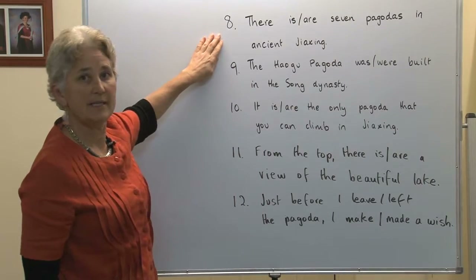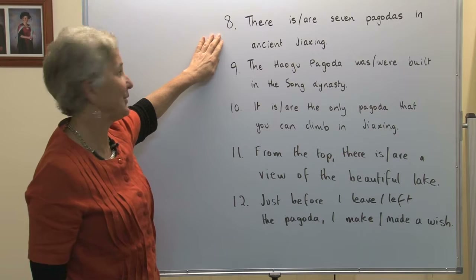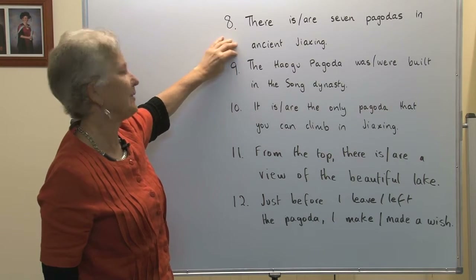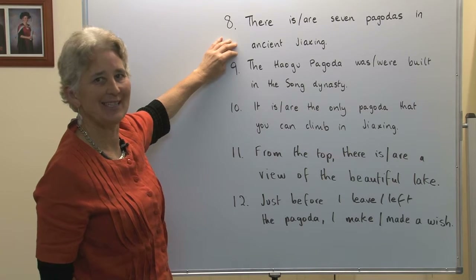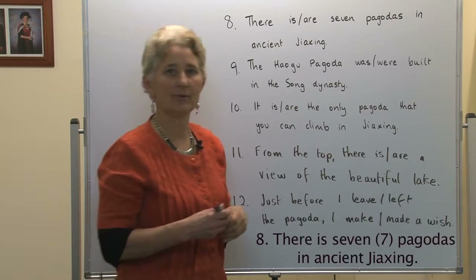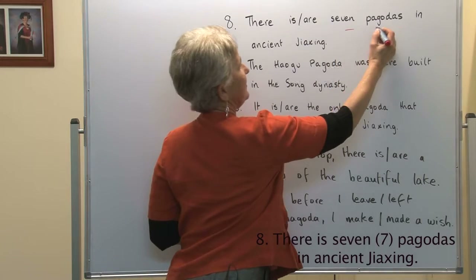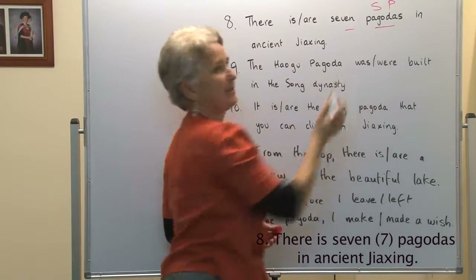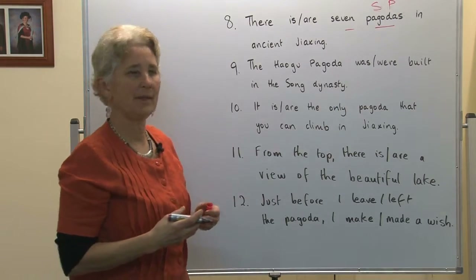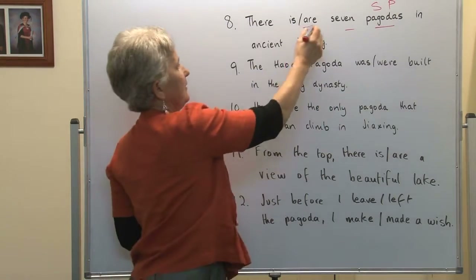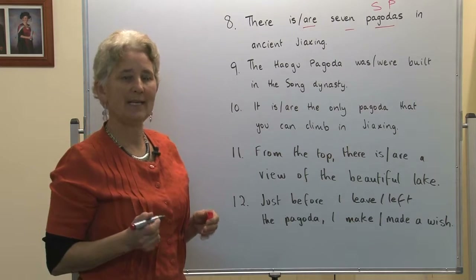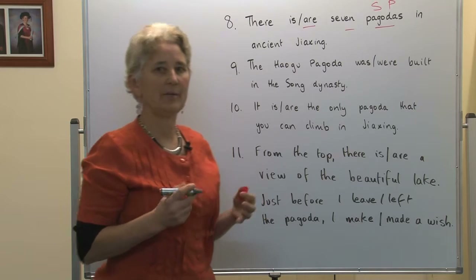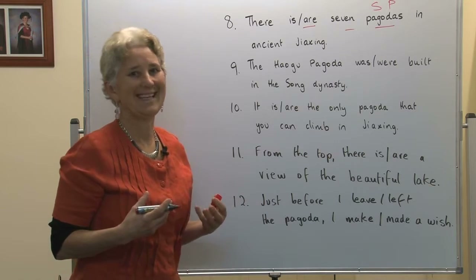Number eight: there are seven pagodas in ancient Jiaxing. Once again, the grammatical subject is 'the seven pagodas'. It is plural because there are seven of them, so it must take the plural form of the verb 'to be' — there are seven pagodas. Notice it is in the present tense because these pagodas are always there.